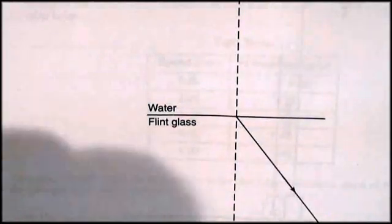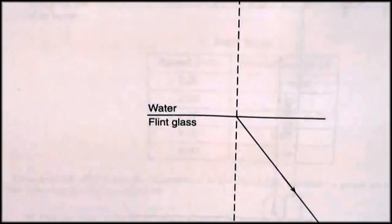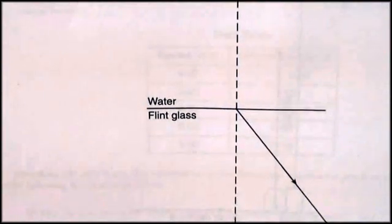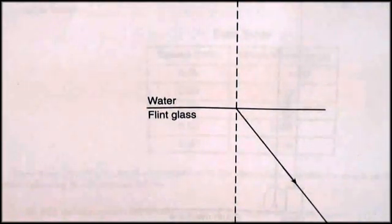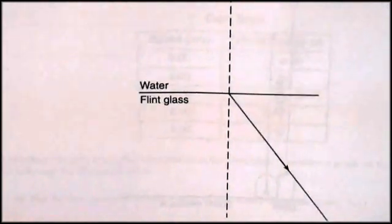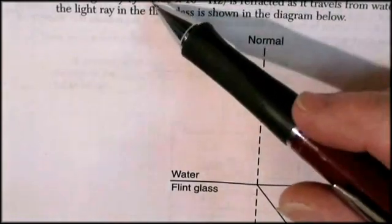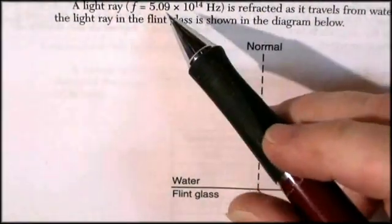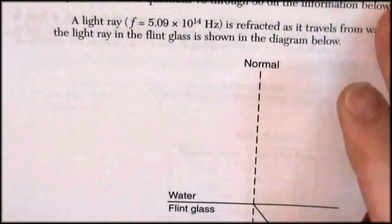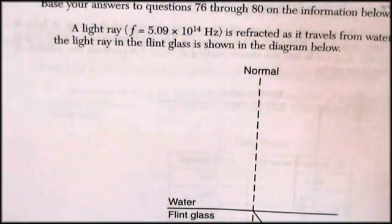Alright, we are on the June 2012 exam. This is page 14, questions 76 through 80. Questions 76, and they all deal with this picture we've got here, which is a light ray of this frequency. The reason they keep telling you this frequency is because the index of refraction is calculated based on that particular frequency of light.